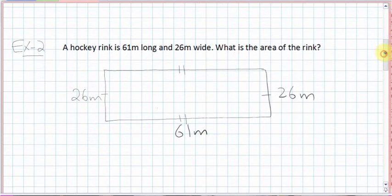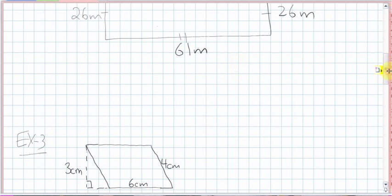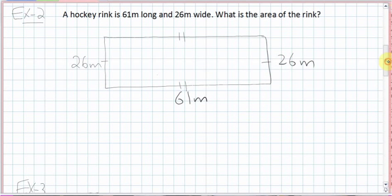Next question. A hockey rink is 61 meters long and 26 meters wide. What is the area of the rink? Now, I know hockey rinks aren't rectangle shaped, but just for simplicity, who cares? Just go along with it. Anyways. So, when you get a word problem like this, draw a diagram. I already did draw a diagram. There's the 61 meters long and the 26 meters wide. And just a matter of, again, that same formula.